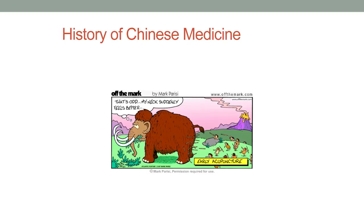Here's a history of Chinese medicine in one slide. The first acupuncture needles were dated back to 1000 BC — that's over three thousand years of history. Around 100 BC, the Huangdi Neijing, the Yellow Emperor's Inner Classic, was written, and that is still the fundamental text used in Chinese medicine today.